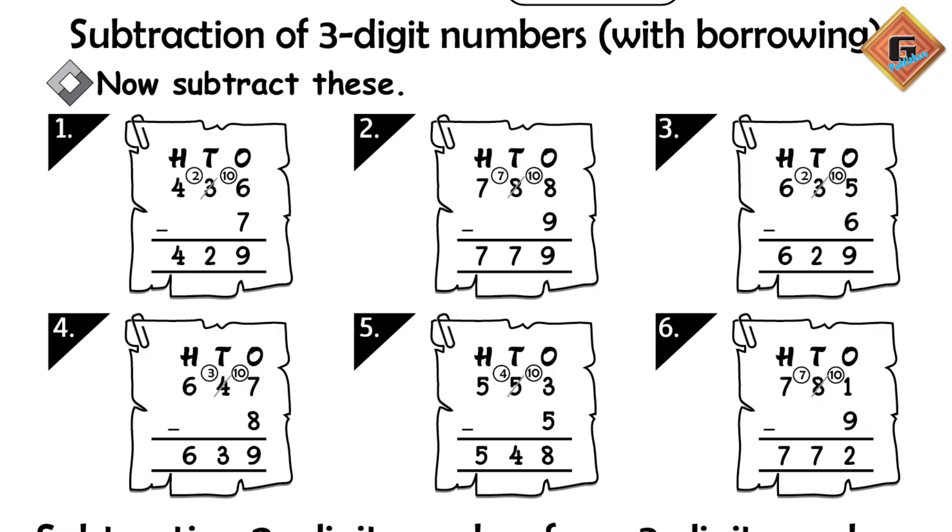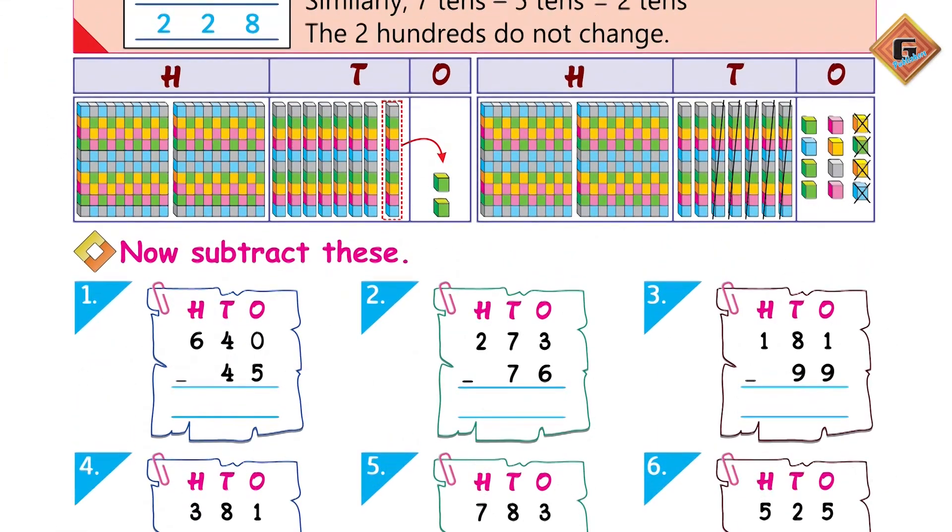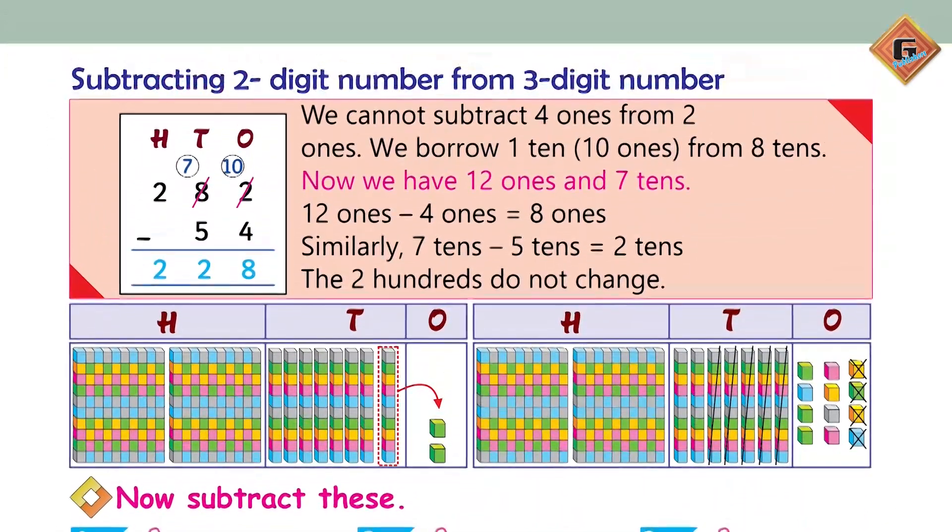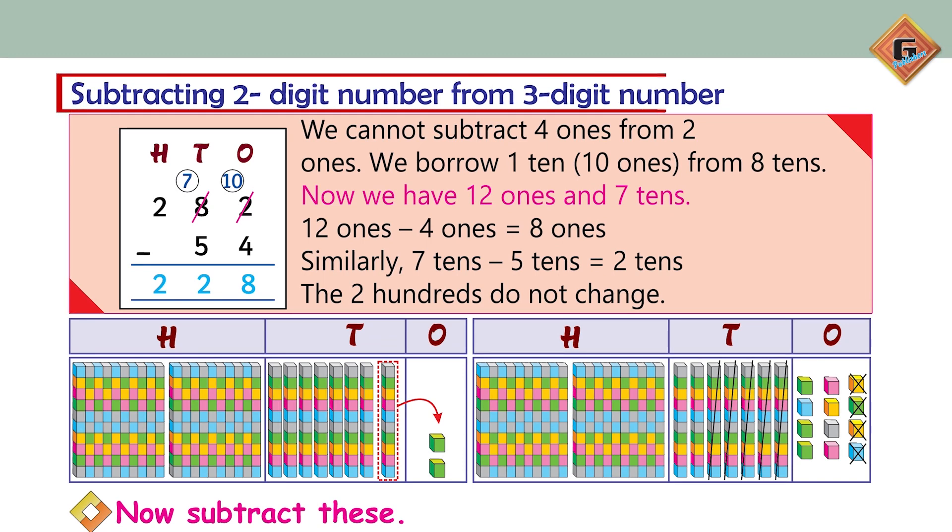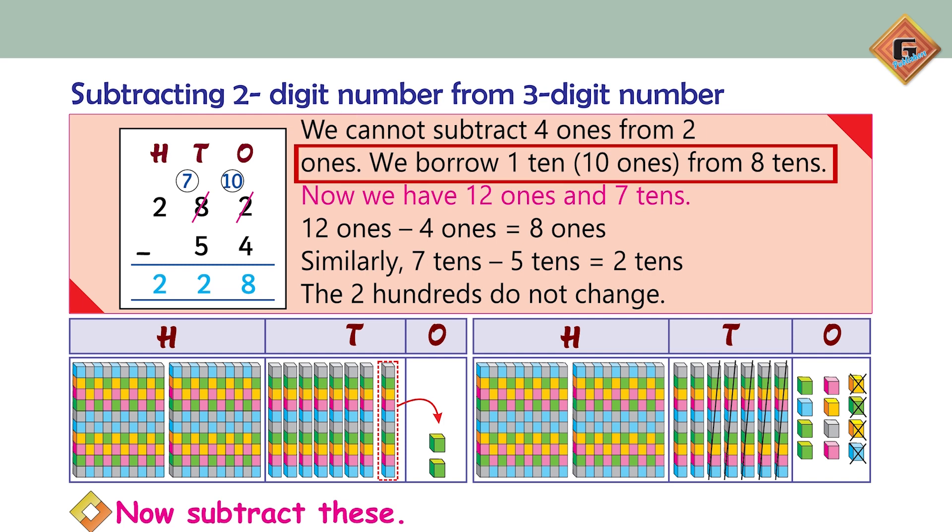Move to page 69: subtracting two-digit number from three-digit number. The numbers are 282 minus 54. We cannot subtract 4 ones from 2 ones. We borrow 1 ten from 8 tens. Now we have 12 ones and 7 tens. 12 ones minus 4 ones is equal to 8 ones. Similarly, 7 tens minus 5 tens is equal to 2 tens. The 2 hundreds do not change.